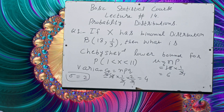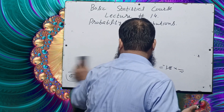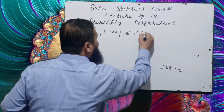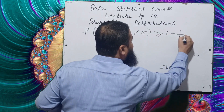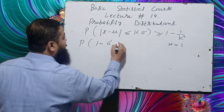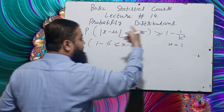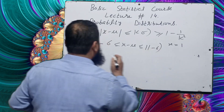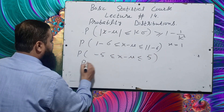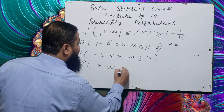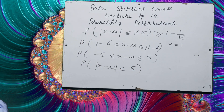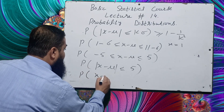Now we apply Chebyshev's inequality. We write: P(1 < X < 11). Substituting: 1 minus 6 is minus 5, and 11 minus 6 is 5. So we get P(−5 ≤ X − μ ≤ 5), which means the modulus |X − μ| ≤ 5.